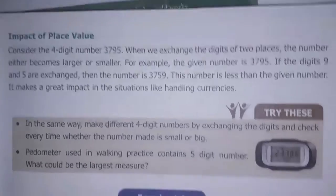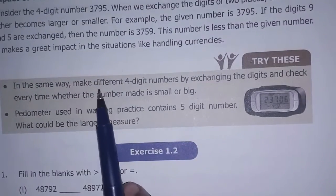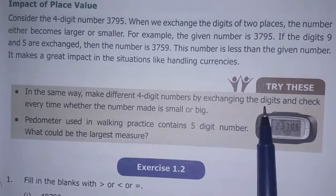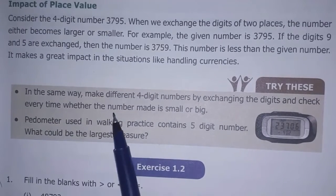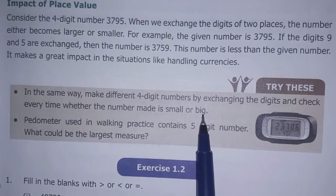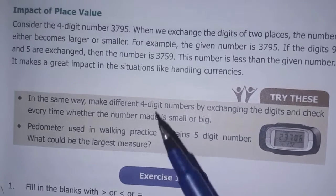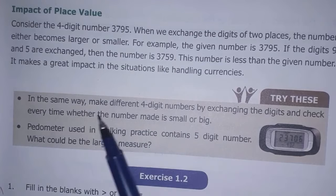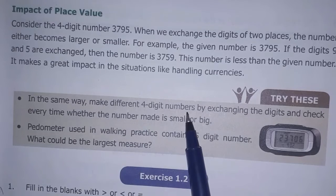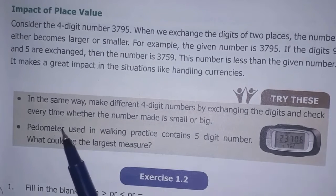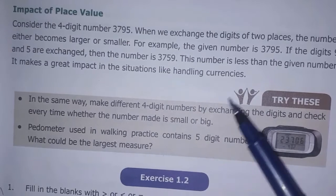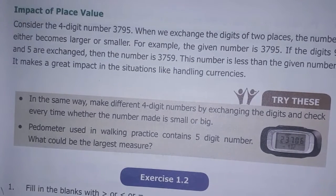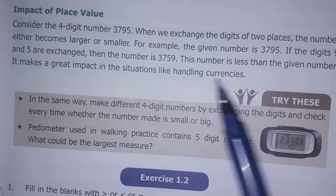In the same way, make different 4-digit numbers by exchanging the digits and check every time whether the number made is small or big. By exchanging the numbers and checking every time, you can verify the impact of place value.